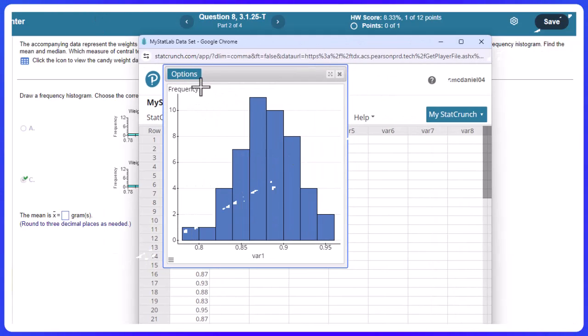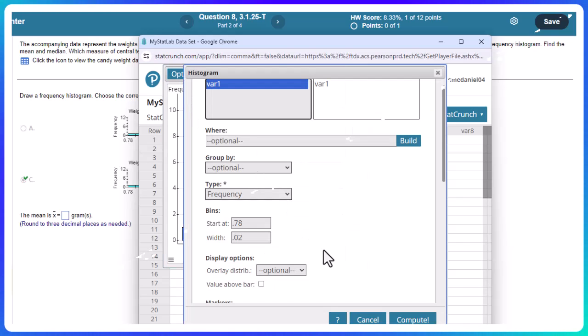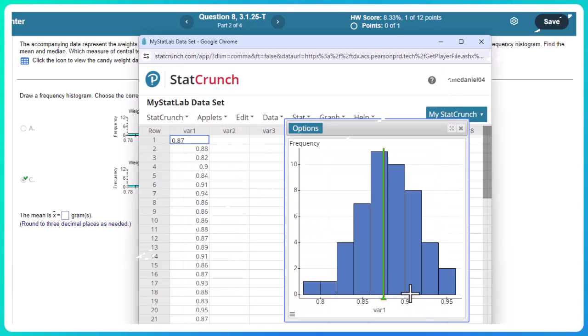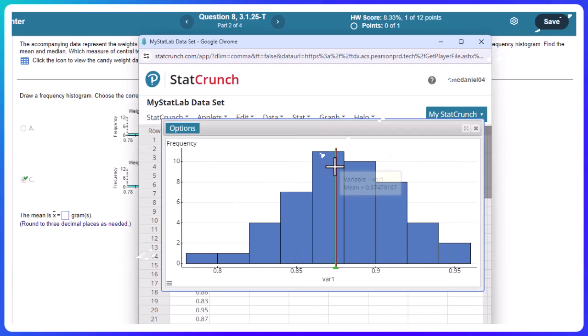So there are two ways to do this. We can actually get the mean straight from the histogram. If I go to Options and Edit, I can put mean, and I bet they're going to ask for median here in a second. I can put mean and median markers on it. Sometimes that is super helpful. So if I hover my mouse over, it tells me the mean here is 0.875. And the median, they're so close together, is also 0.875.